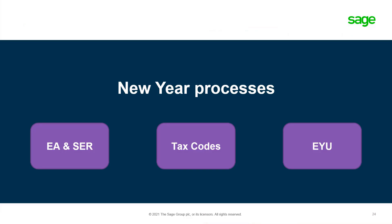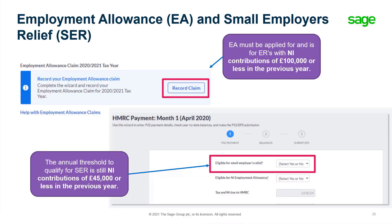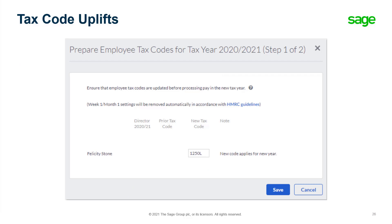Now let's look at New Year Processes, covering Employment Allowances (EA), Small Employers Relief, Tax Codes, and the Early Year Update. Once you have completed your year end, you will be able to record a claim for your employment allowance on the Summary screen for the next tax year, and select whether the employer qualifies for Small Employers Relief. As part of the first pay run of the new year, a prompt will ask you to confirm the correct tax codes — simply change the code and click Save to apply it for the new year.